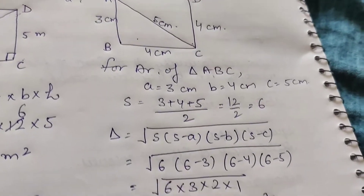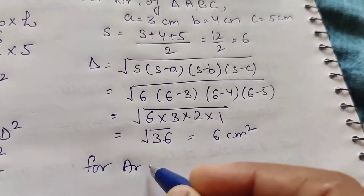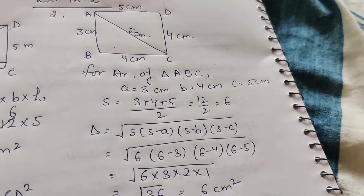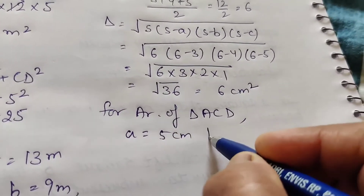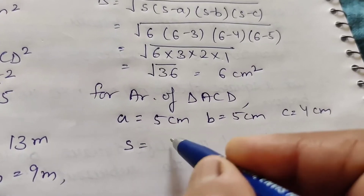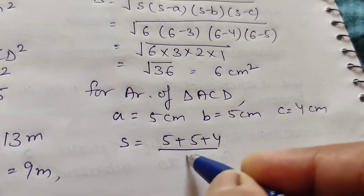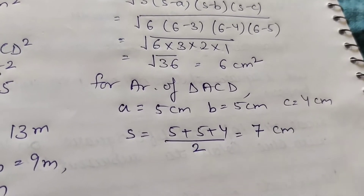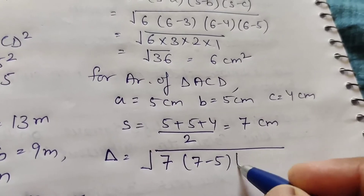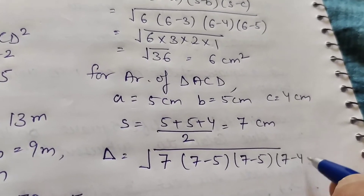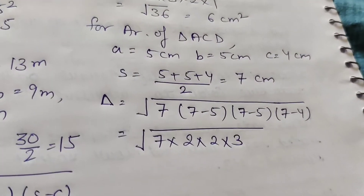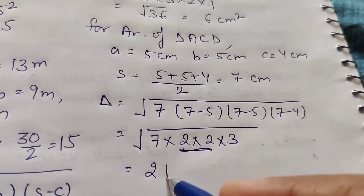For the area of triangle ACD, there are three sides: A equals 5, B equals 5, and C equals 4. S equals (5 plus 5 plus 4) by 2, which is 14 by 2 equals 7 centimeter. Area equals under root of 7 into (7−5) into (7−5) into (7−4), giving under root of 7 into 2 into 2 into 3. This gives 2 root 21.